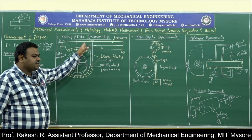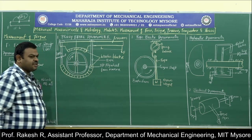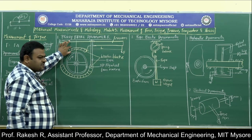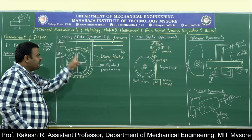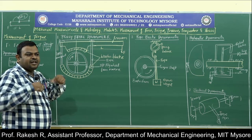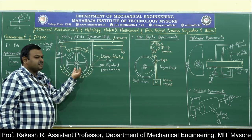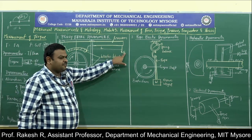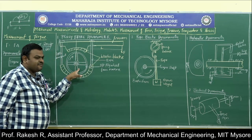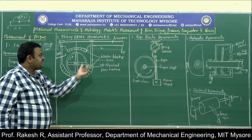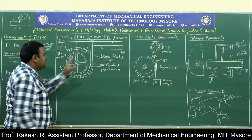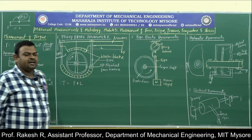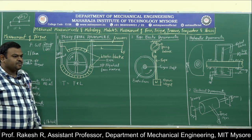Here is a sketch of the Prony brake dynamometer. There is an output shaft or flywheel. A brake is applied using ropes and wooden blocks, which opposes the force and induces torque. The torque generated is T = F × L. This is the torque obtained in the rope brake dynamometer.